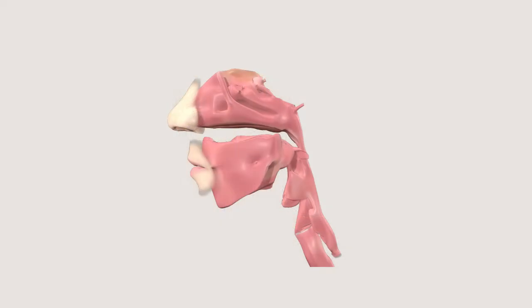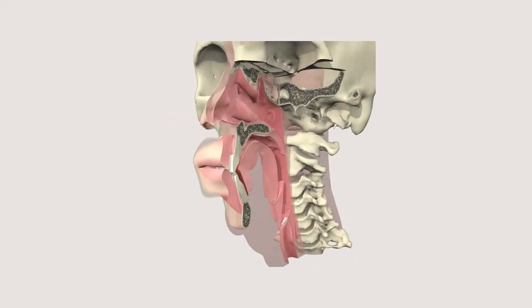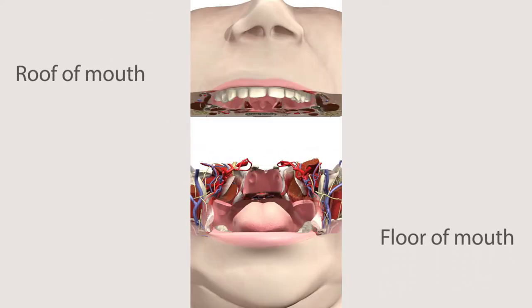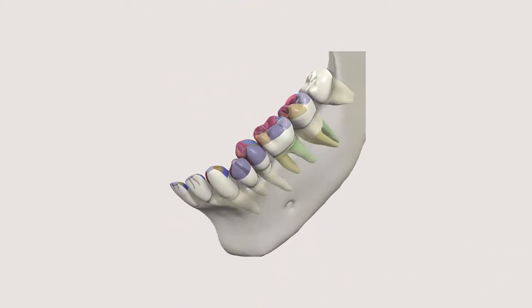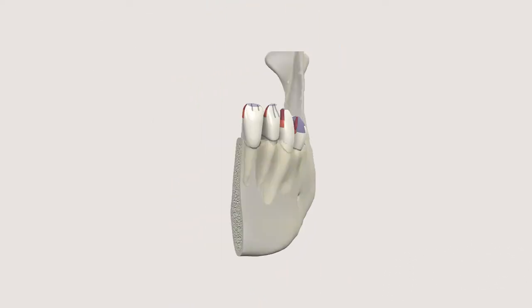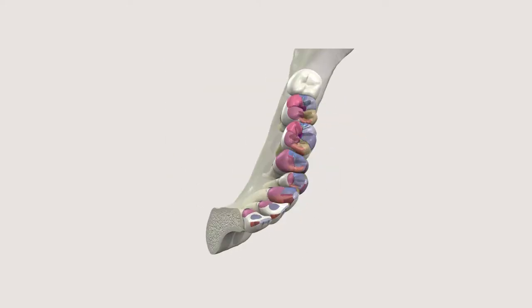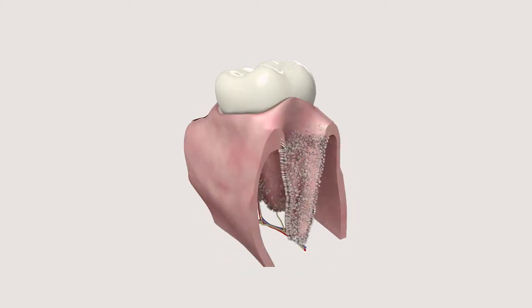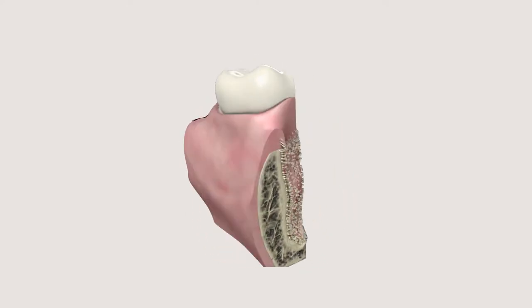Key areas of anatomy are modeled separately and in detail, such as the roof and floor of the mouth, individual teeth complete with cusps, grooves, pits and ridges, and a cross-section of a molar.